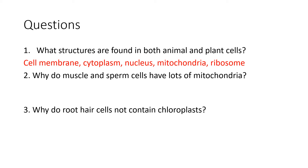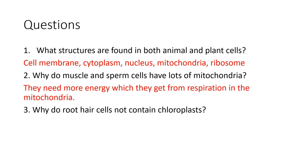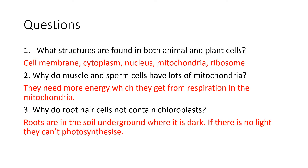Second question: why do muscle and sperm cells have lots of mitochondria? Think about what those things do. Your muscle cells are having to do a lot every time you move. Sperm cells have to swim an epic journey to do the function they're adapted for. So that means they need more energy, which they get from respiration that happens in the mitochondria organelles inside your cells. Finally, why do root hair cells not contain chloroplasts? It's dark underground where roots are, so no light is actually getting to your roots — so there's no point in them having them because they can't actually photosynthesize.